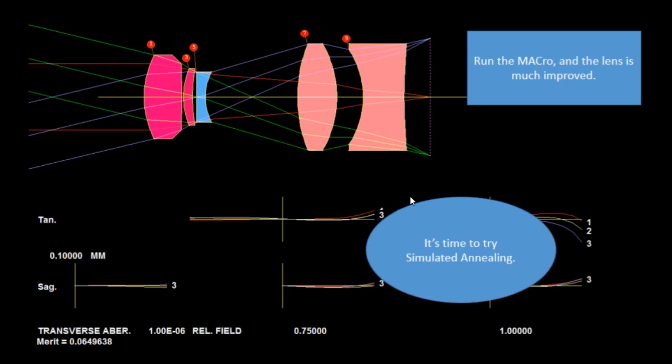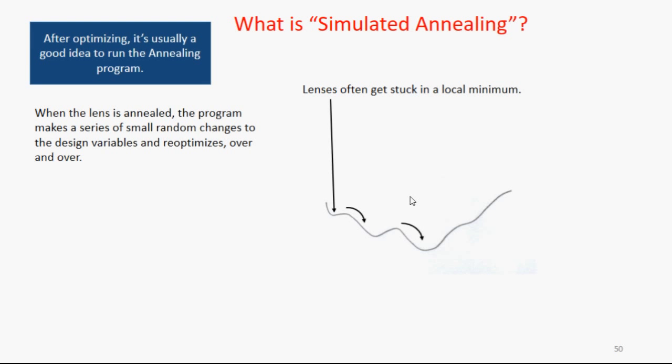Now it's time to try simulated annealing. What's simulated annealing? Well, after optimization, it's always a good idea to run that. Because in lens design, you'll find lenses frequently get stuck in what's called a local minimum. That is, the quality has a minimum point, but it's not very good. The simulated annealing makes a set of small random changes, which just bounces it out of there. And then it can go downhill and find a better minimum. And if you bounce out of that, you can find an even better one. And it's a real good thing to do. I use it all the time.